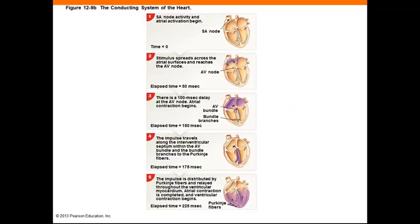Each time the heart beats, a wave of depolarization radiates through the atria, reaches the AV node, travels down the interventricular septum to the apex, then turns and spreads through the ventricular myocardium towards the base.